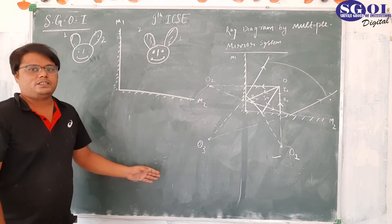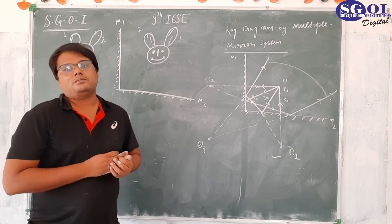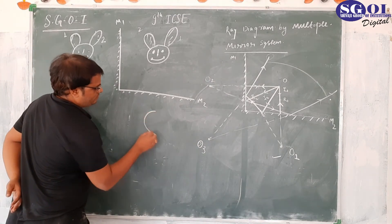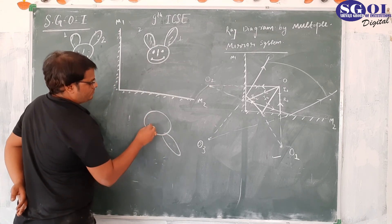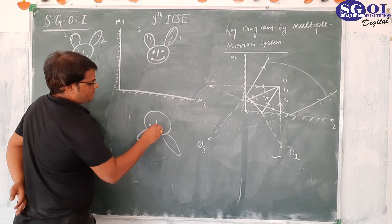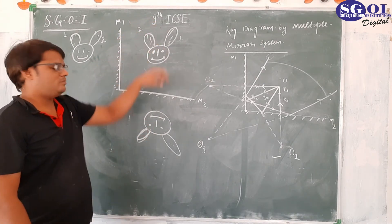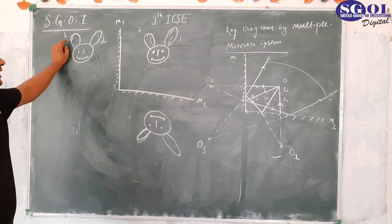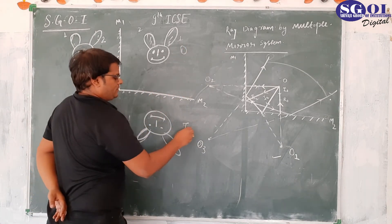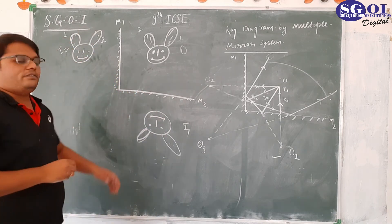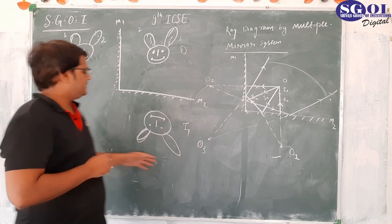So image number 1 is formed beneath the mirror — up becomes down, down becomes up, left becomes right, right becomes left. This is our object, this is our first image, and this is our second image. The third image is formed at the junction of the mirrors, somewhere here.